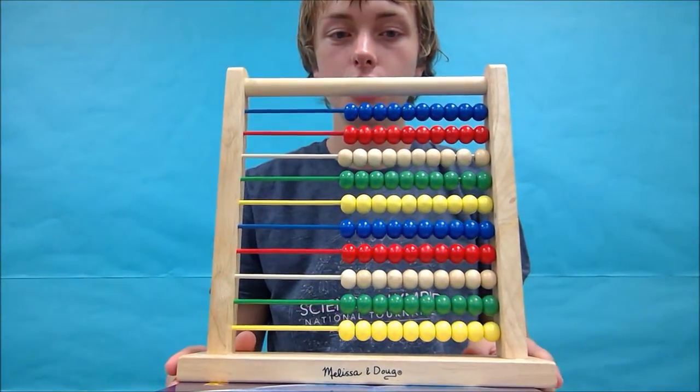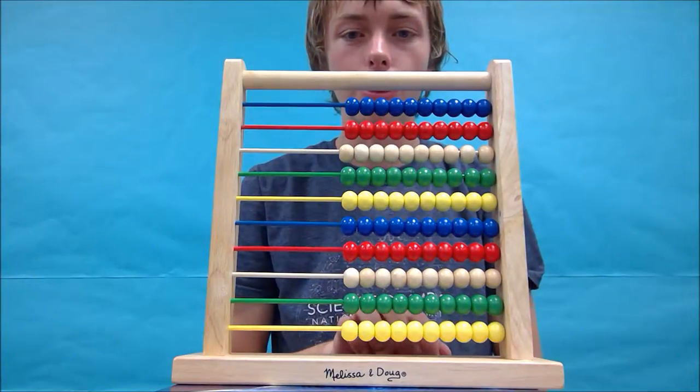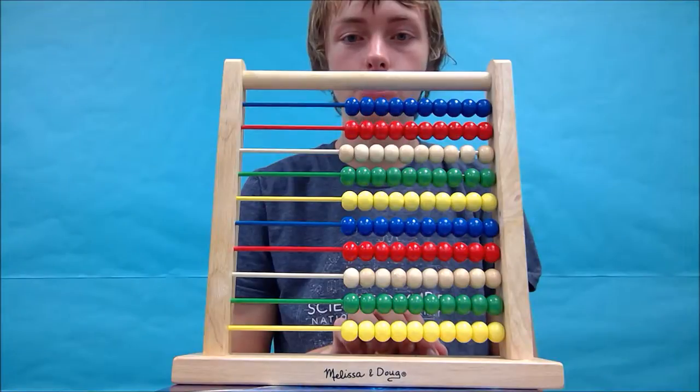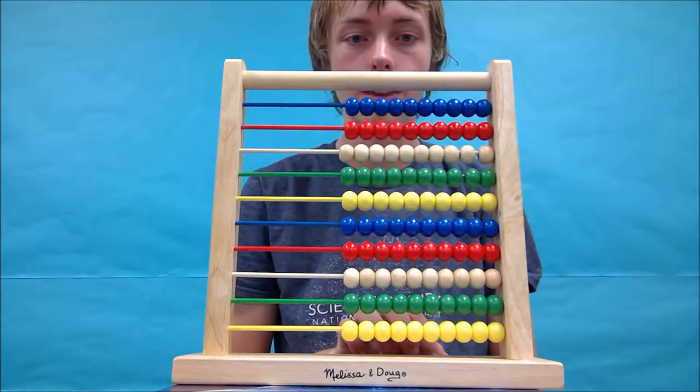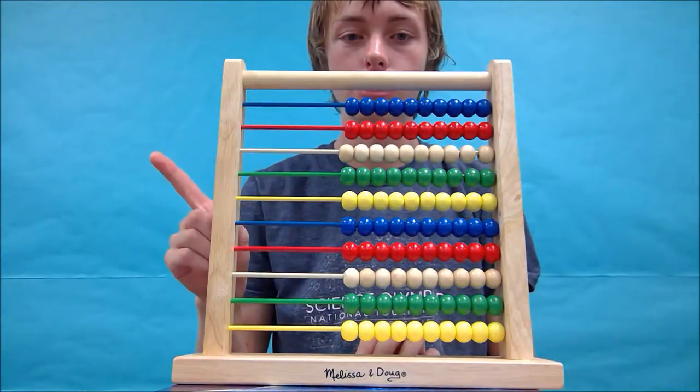Subtracting large numbers can be tricky but can also be done. So let's begin with an easier one though. Let's start with 6,394 minus 3,212. Again, like we've done with all of our other videos so far, we're going to start by forming the first number.